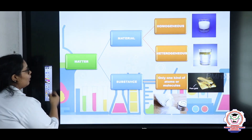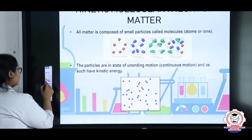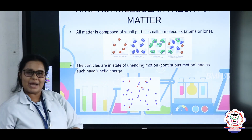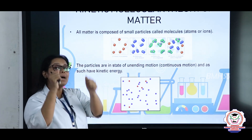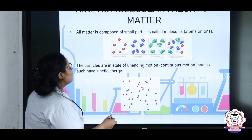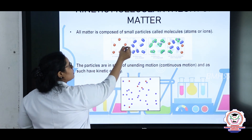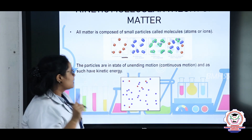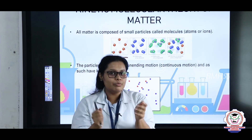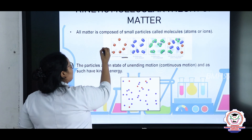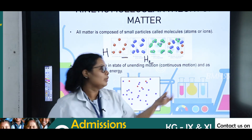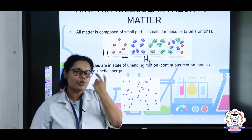Now let's come to the next topic: the molecular kinetic theory of matter. The first principle is that all matter is composed of small particles — that is molecules — which can be atoms or even ions. In an element, atoms of only one kind of material will be there. In a molecule, the same kind of atoms go in pairs, not individually. For example, H₂ is a molecule of hydrogen.